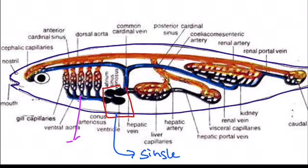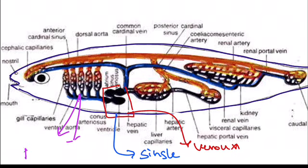Since the deoxygenated blood flows in this heart, this heart is called a venous heart. From the heart the blood is pumped into the gills by the ventral aorta, so this kind of circulation is called branchial circulation. In pulmonary circulation, the blood is pumped into lungs from the heart, but in a fish the blood is pumped into the gills for the purification of the deoxygenated blood.